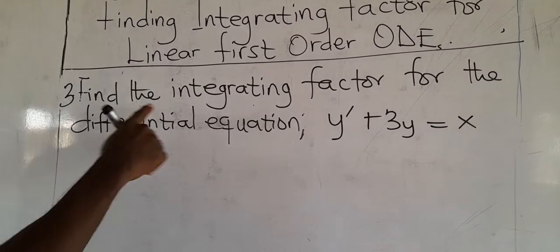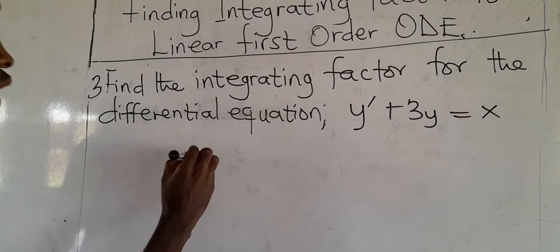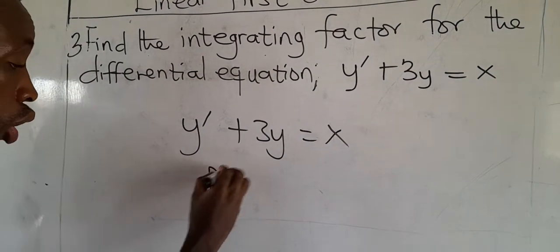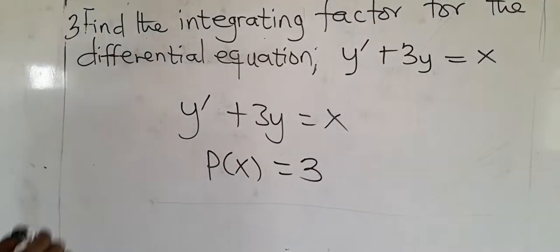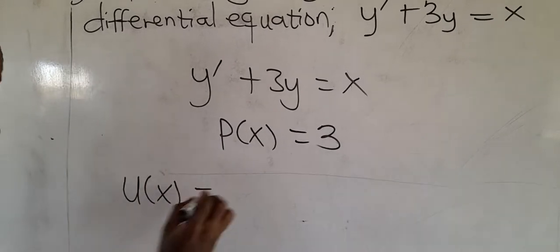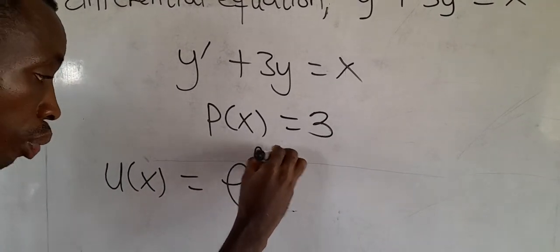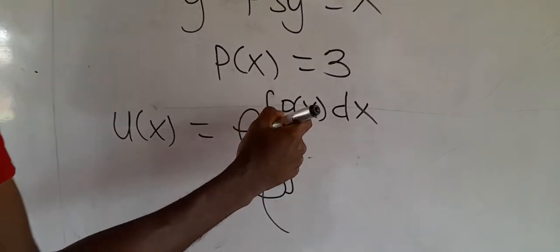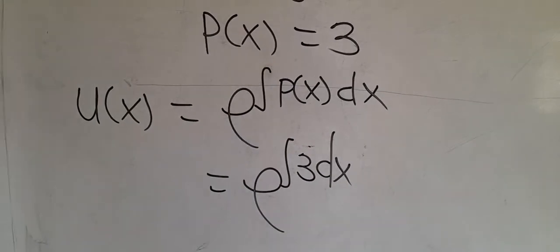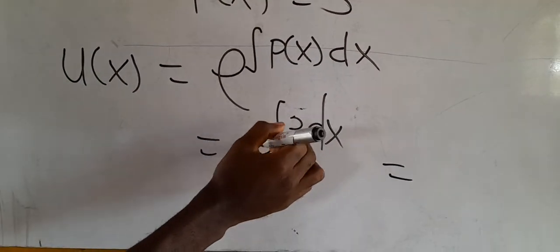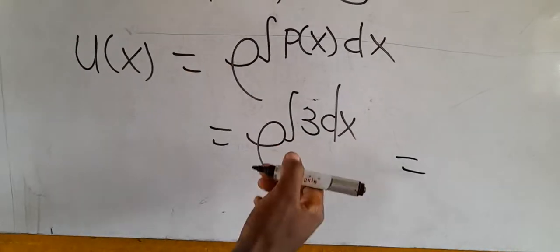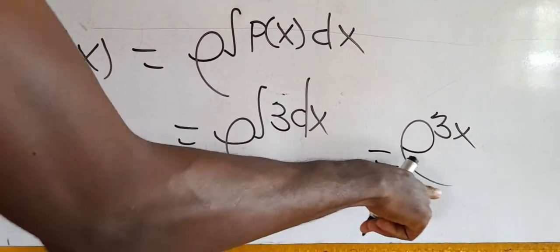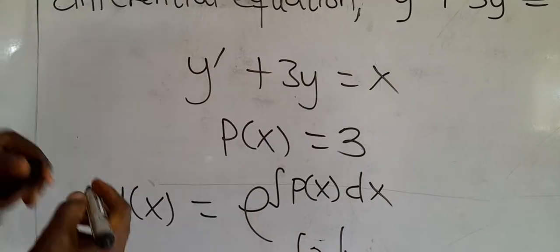For the third example, find the integrating factor for: dy + 3y = x. P(x), the coefficient of y, is 3. The integrating factor u(x) = e to the integral of P(x) dx = e to the integral of 3 dx. Integrating a constant, we attach the variable: e to the power of 3x. So the integrating factor for this equation is e^(3x).